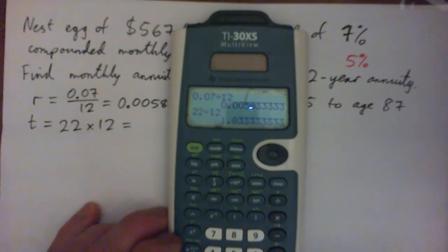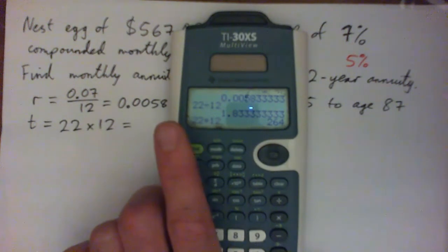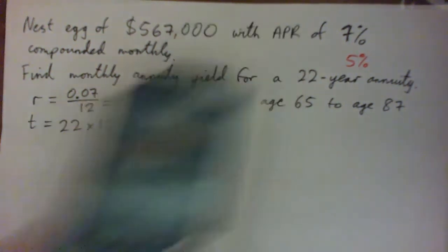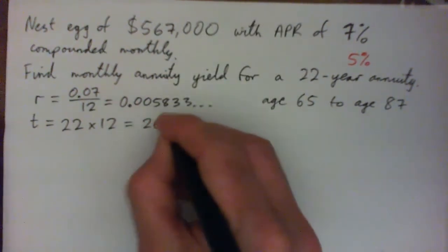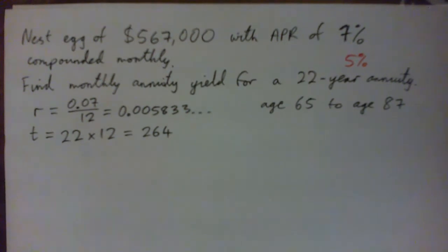It should be times 12. Well, it should be 264 months, right? 264, right? So that's our rate, that's our t.